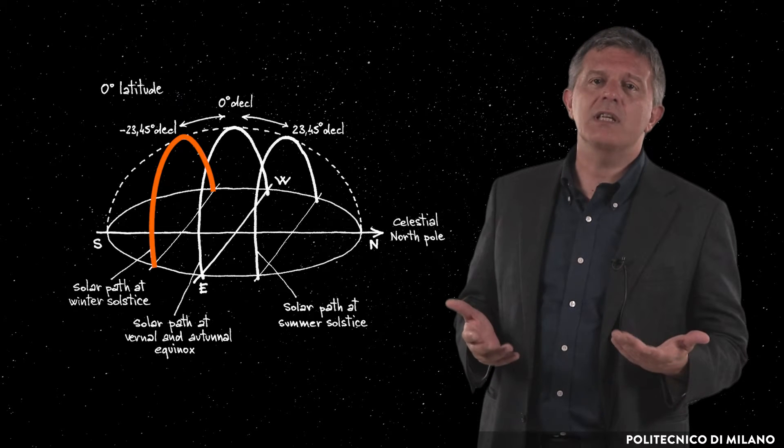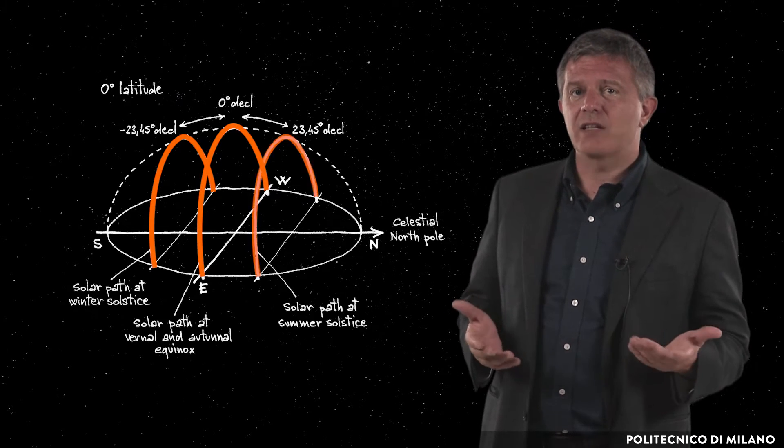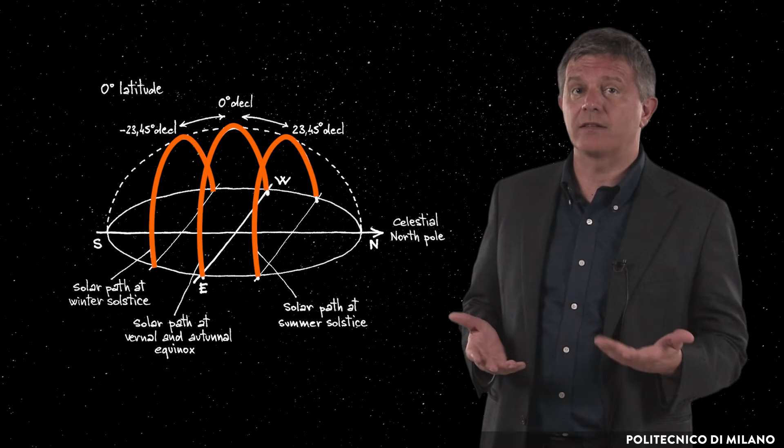an observer on the Earth perceives in the course of the year different solar paths, characterized by variable heights and lengths depending on time of year and latitude.